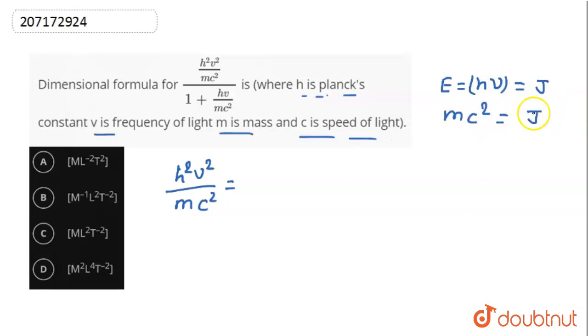So if it is an energy equation with units of joule, this numerator, when we get the net result, will be condensed to joule. This unit will be joule.